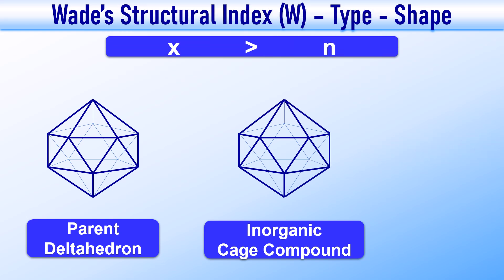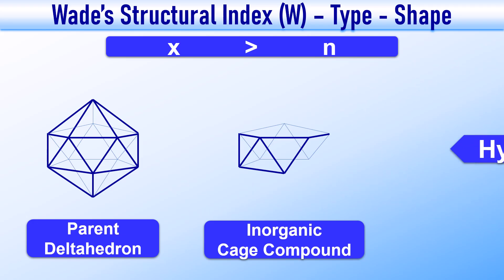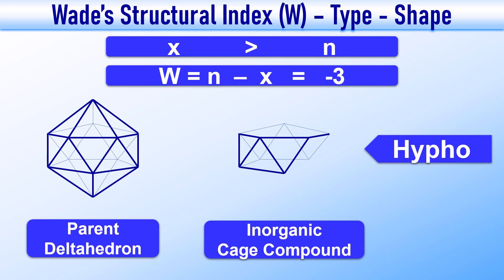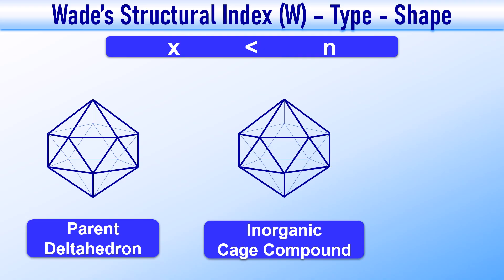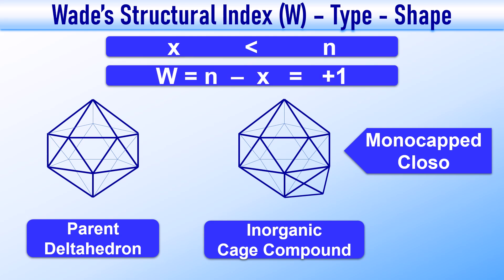If three vertices are missing from the parent deltahedron, the cluster is said to be a hypho-type cluster. Here the Wade's index W is minus 3. It is also possible for the actual cluster to have more vertices than the parent deltahedron — that is, X is less than N. For example, if one extra vertex is added, the cluster is called a monocapped closo-type cluster. Here W is equal to plus 1.